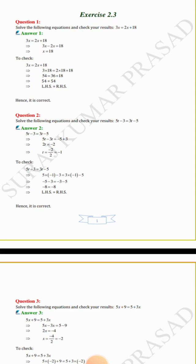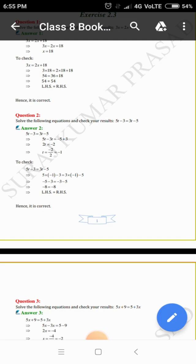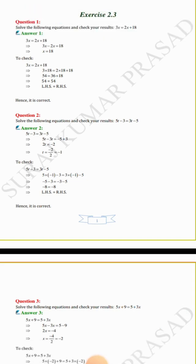To check, we keep t equals minus 1 in the equation. 5 × (−1) − 3 = 3 × (−1) − 5 gives minus 5 minus 3 equals minus 3 minus 5, so minus 8 equals minus 8. Both sides give the same answer, so LHS equals RHS, hence it is correct.